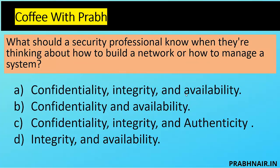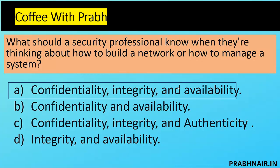Next question: what should a security professional know when thinking about how to build a network or manage a system? The question specifically involves a security professional. Option A has confidentiality, integrity, and availability. Option B is missing availability. Option D has only integrity and availability. From an information security professional's perspective, resources must be available to authorized users — confidentiality — remain accurate — integrity — and be available whenever required. The most important thing is the CIA triad, so the answer is A.